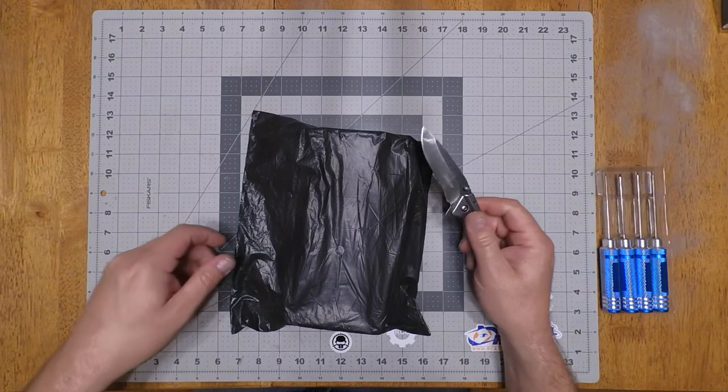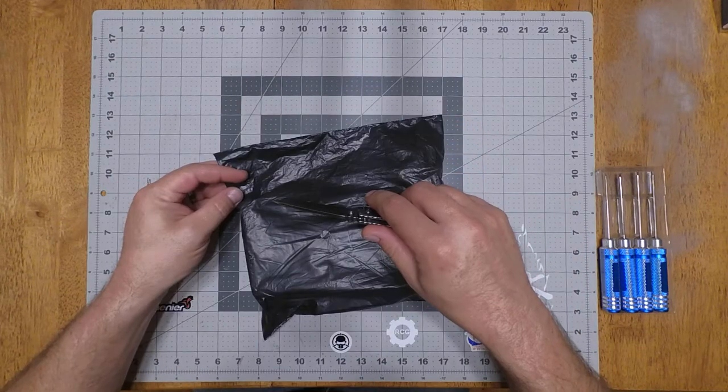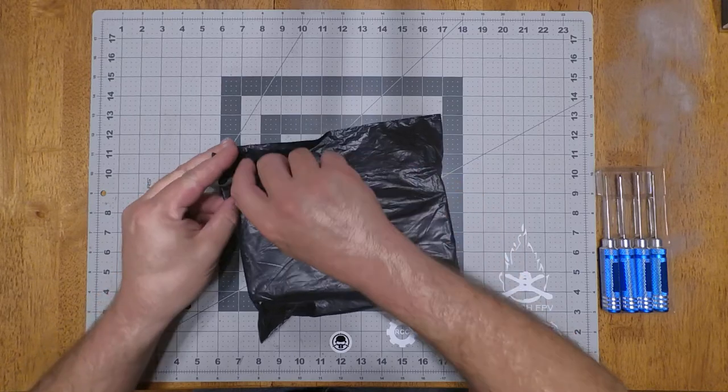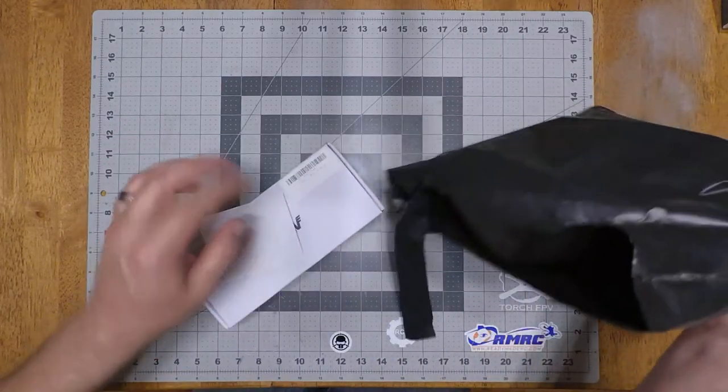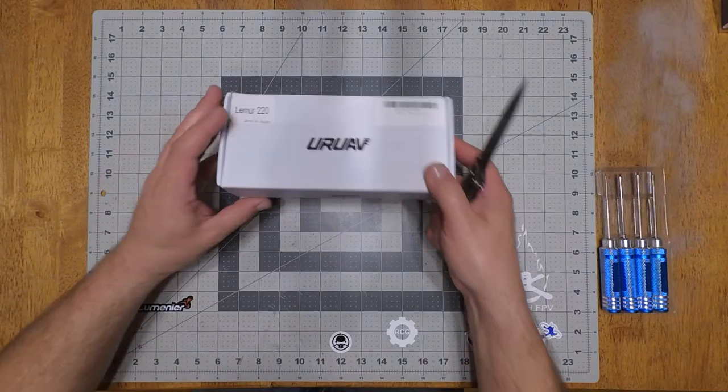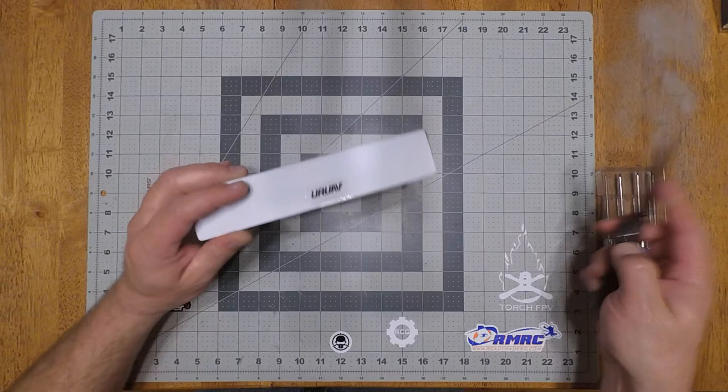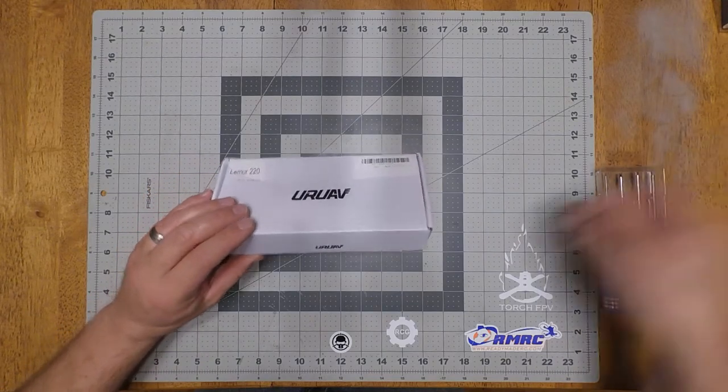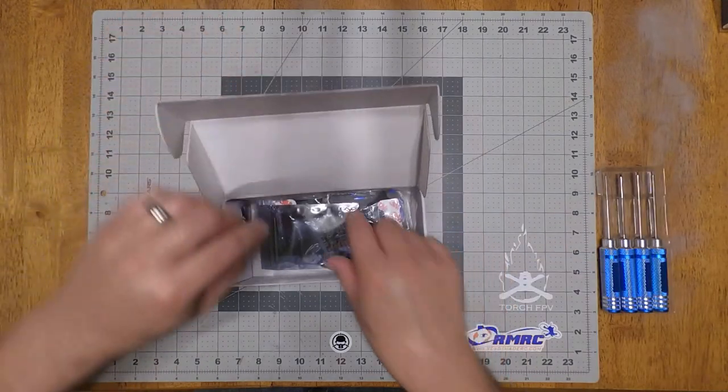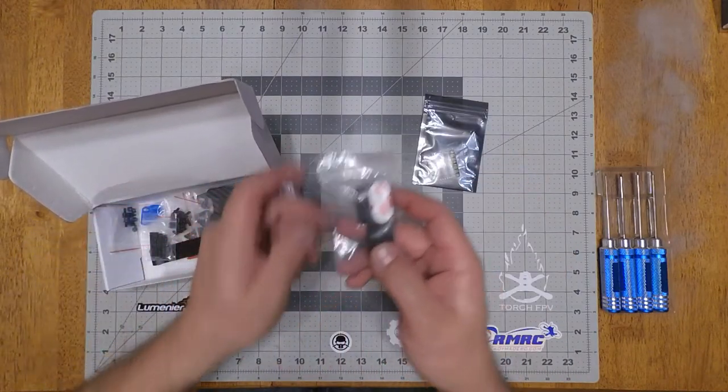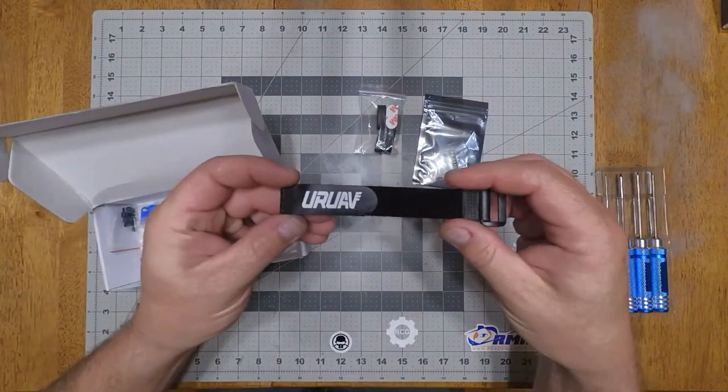Hey everybody, we got another frame. This is going to be the UR UAV Lemire 220. Comes with a PDB, landing pads, and branded strap.